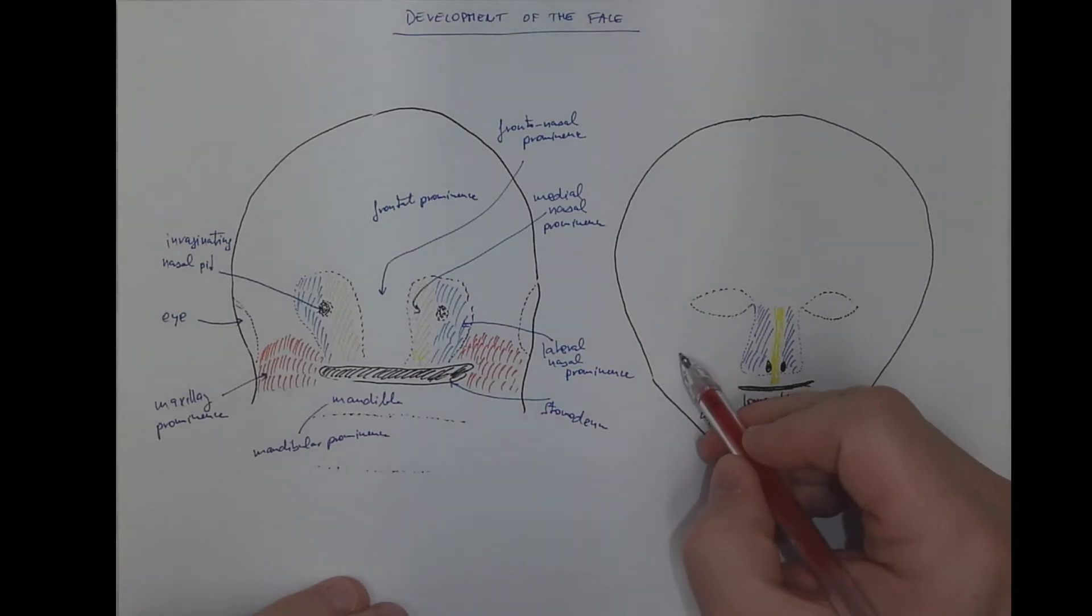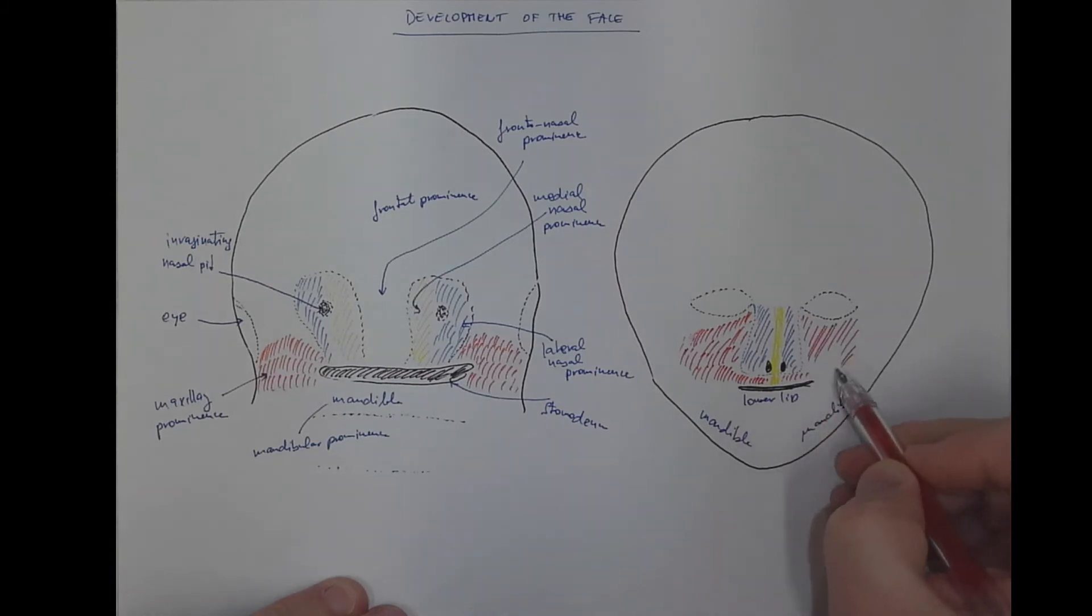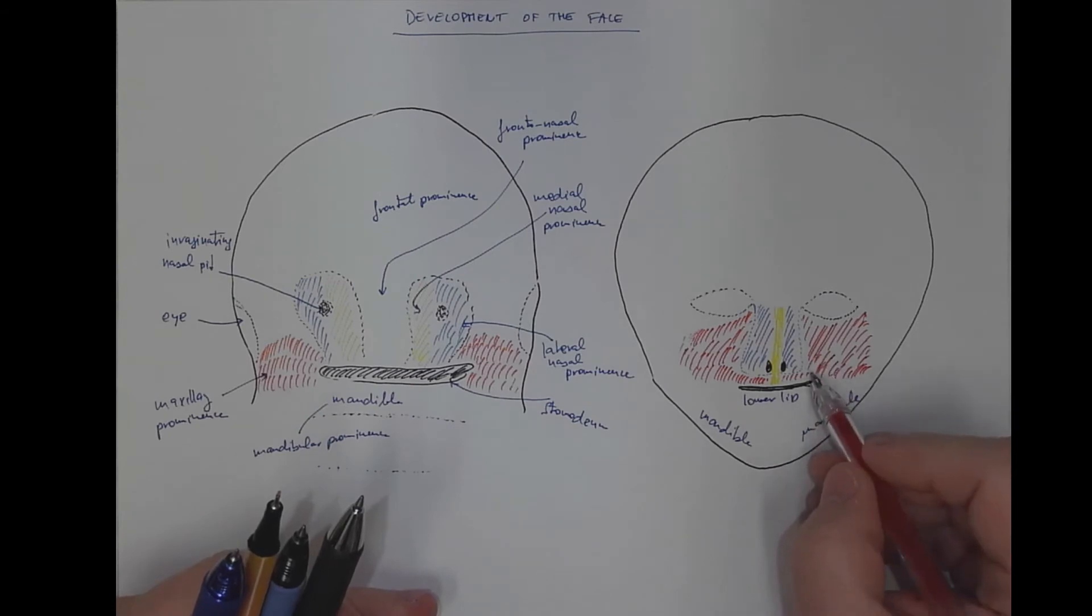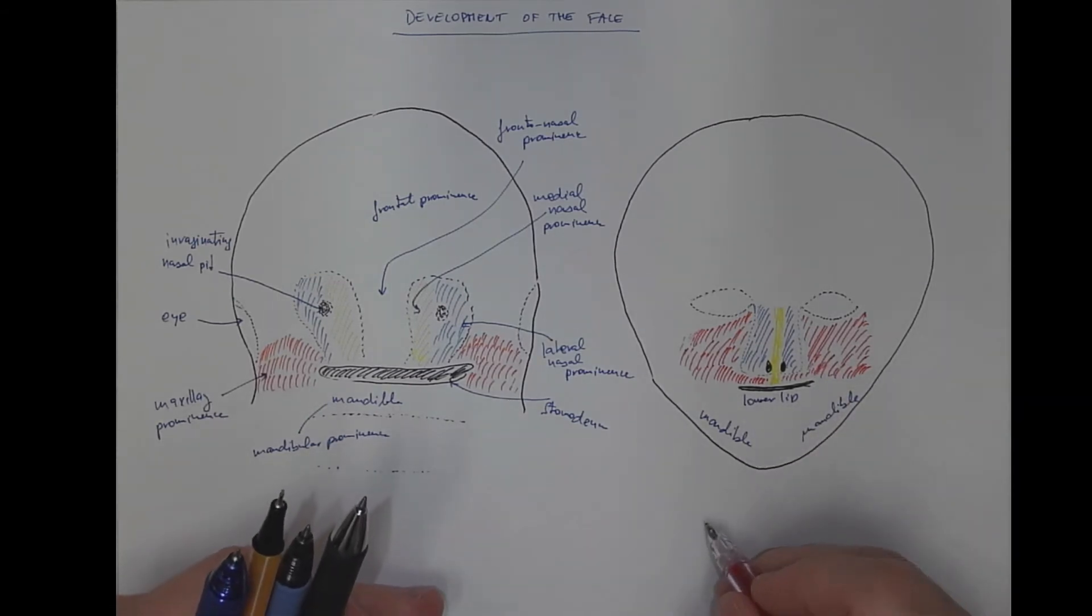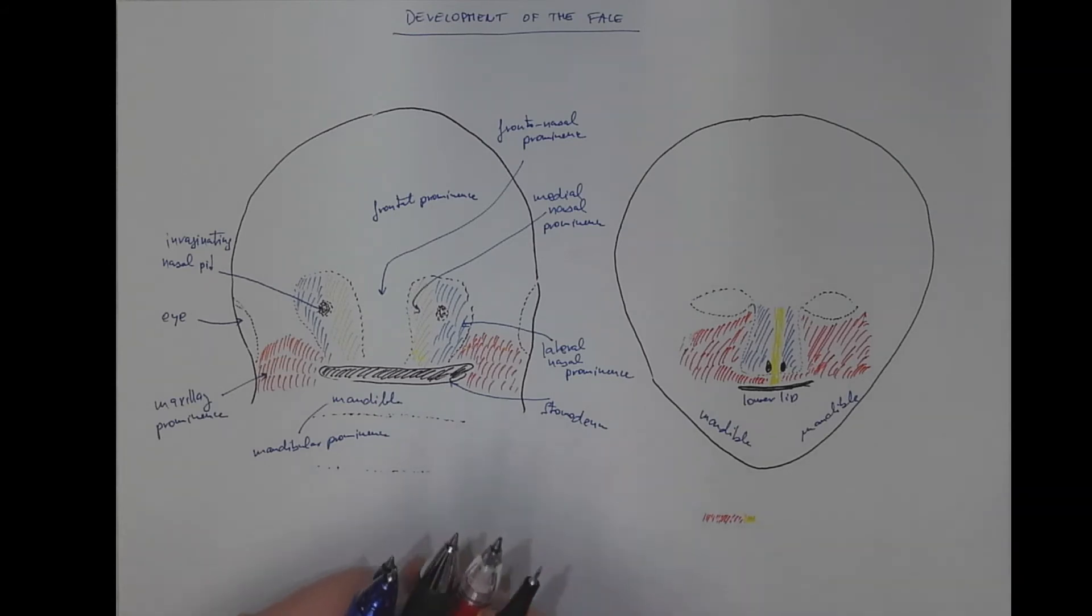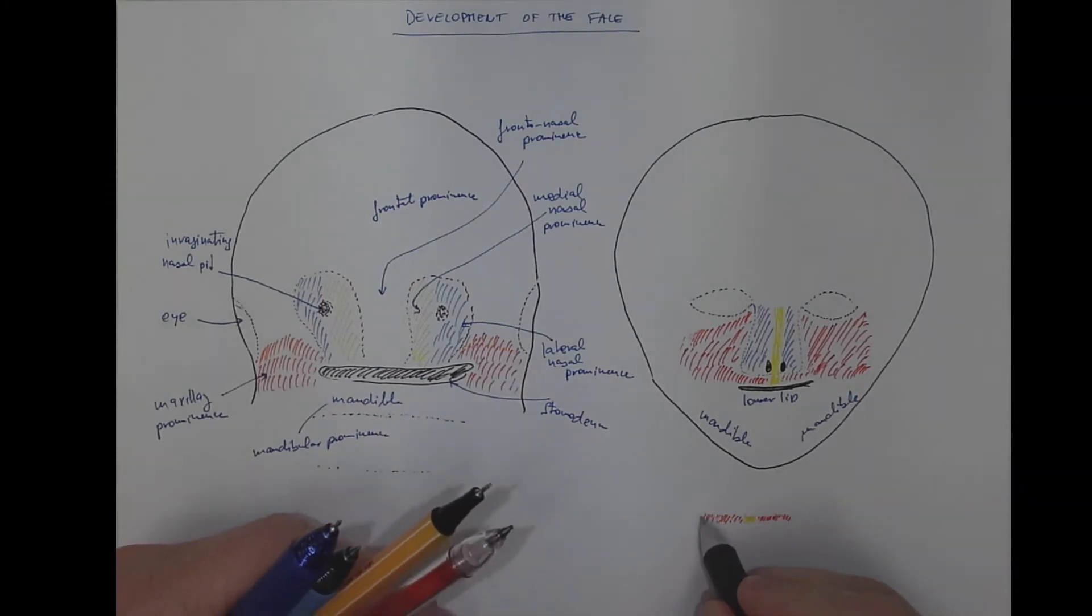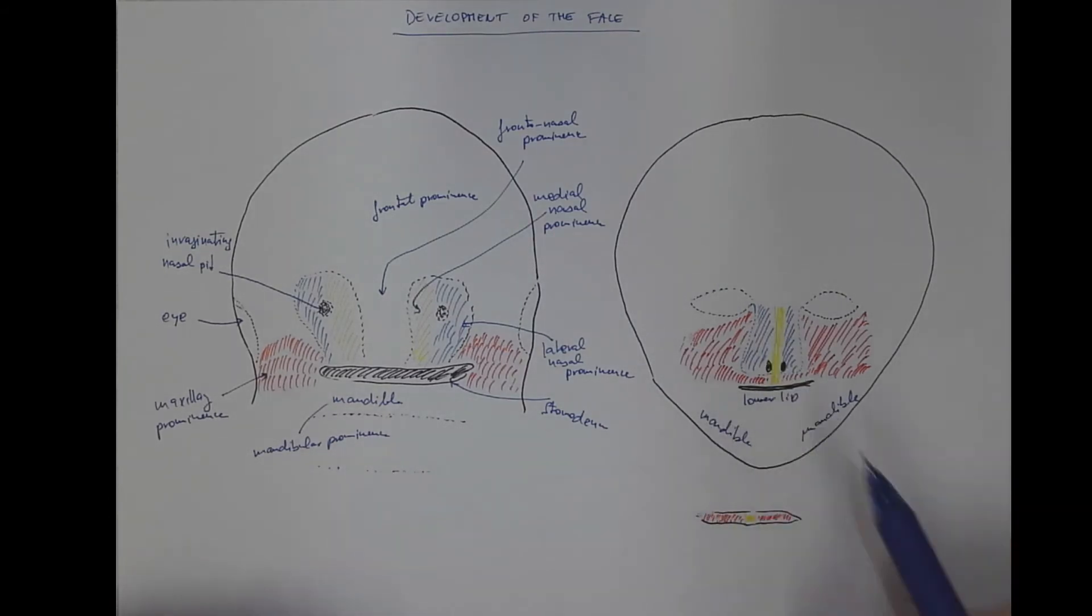And the maxillary prominence will grow pretty much, being responsible for these parts of the face and also for the upper lip from both sides. So actually the upper lip, as we can see from the scheme, requires three components to fuse: the right maxillary prominence, the philtrum in the midline, and the left maxillary prominence to form a complete upper lip.